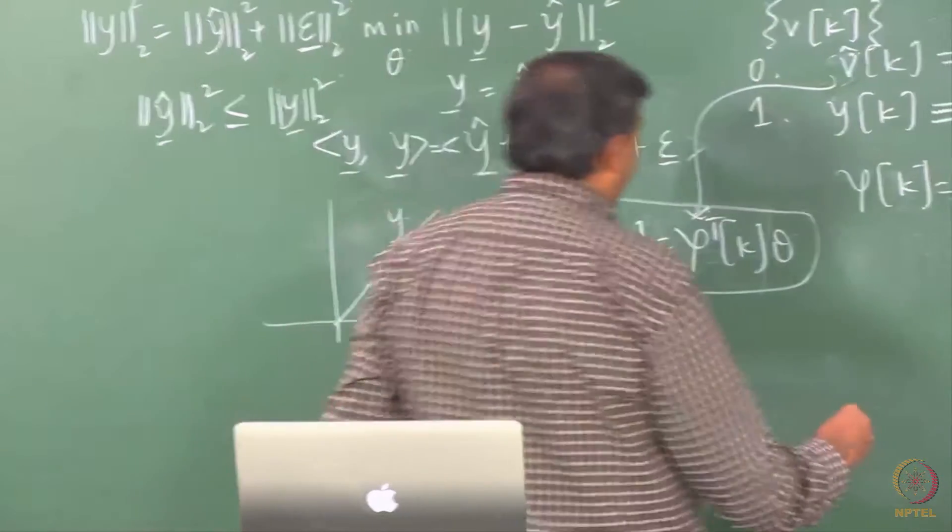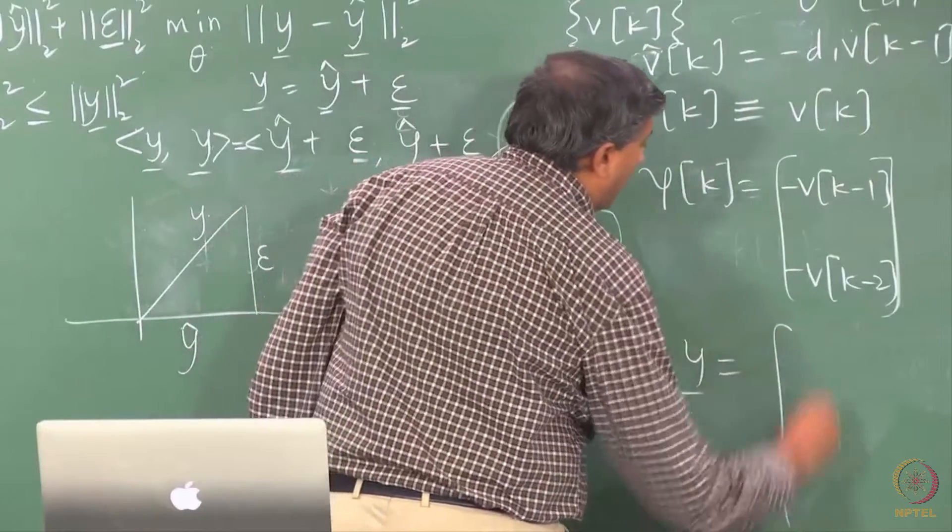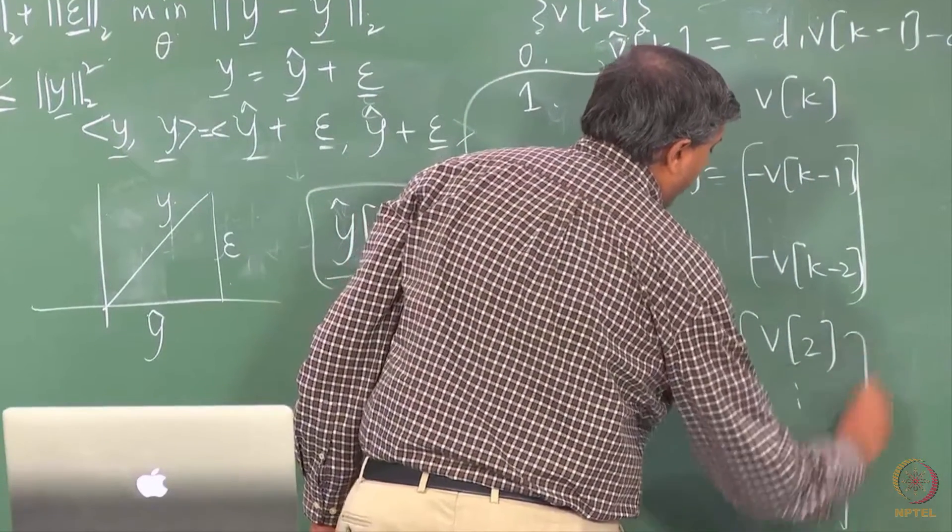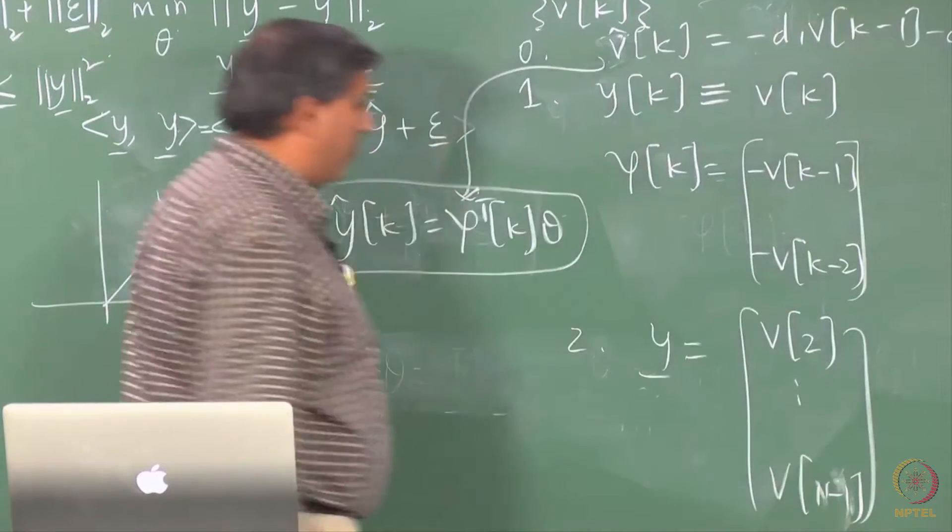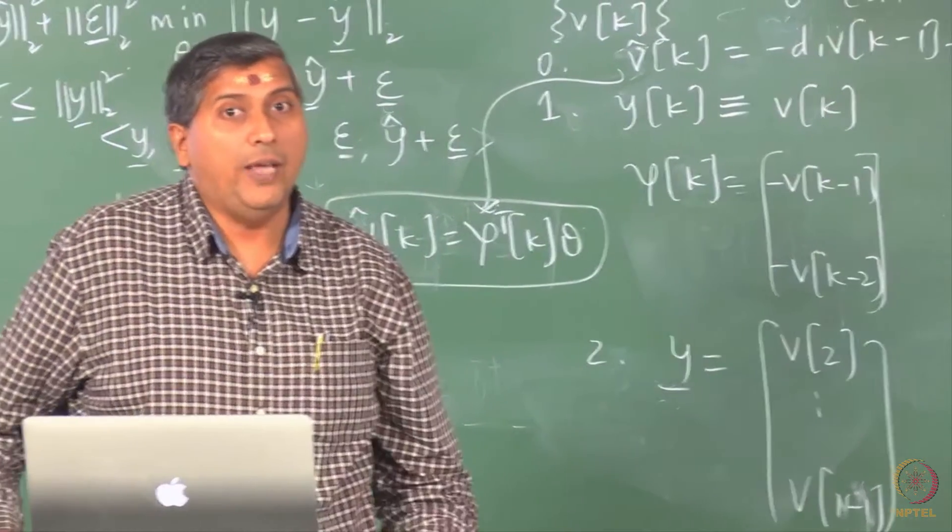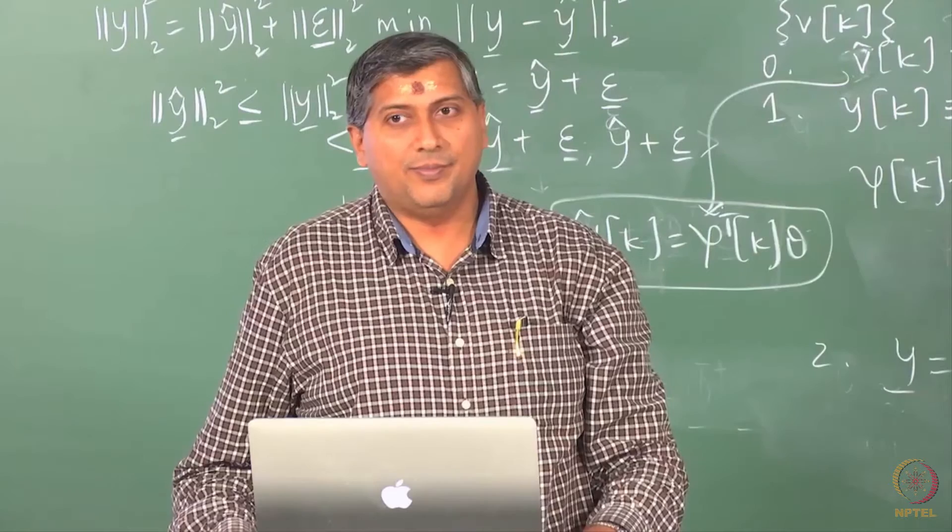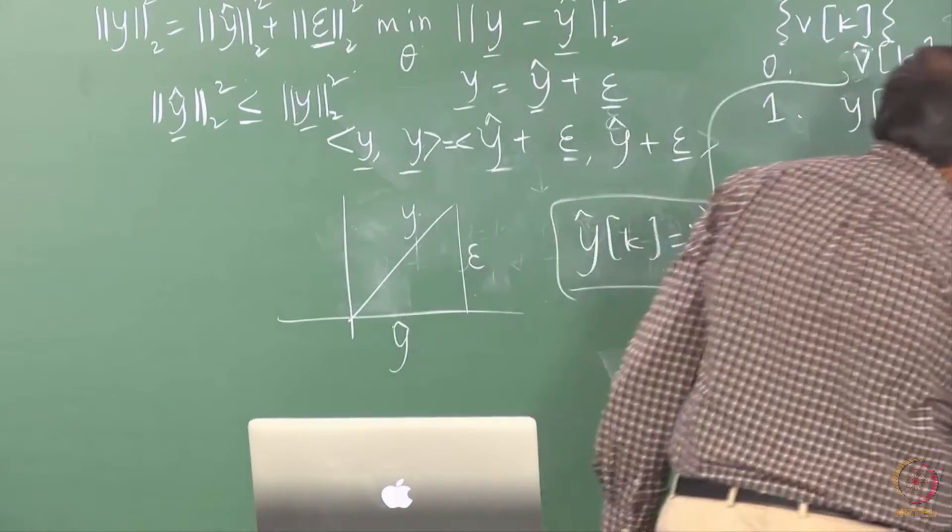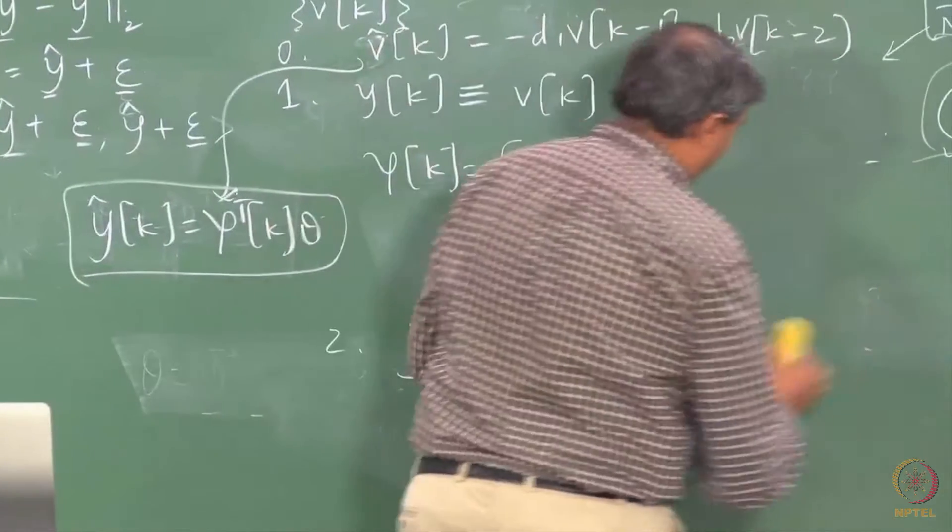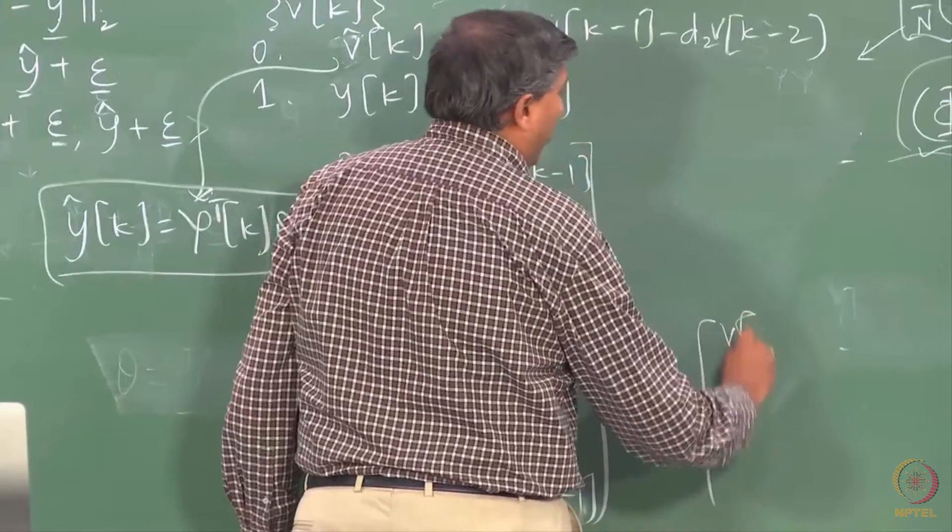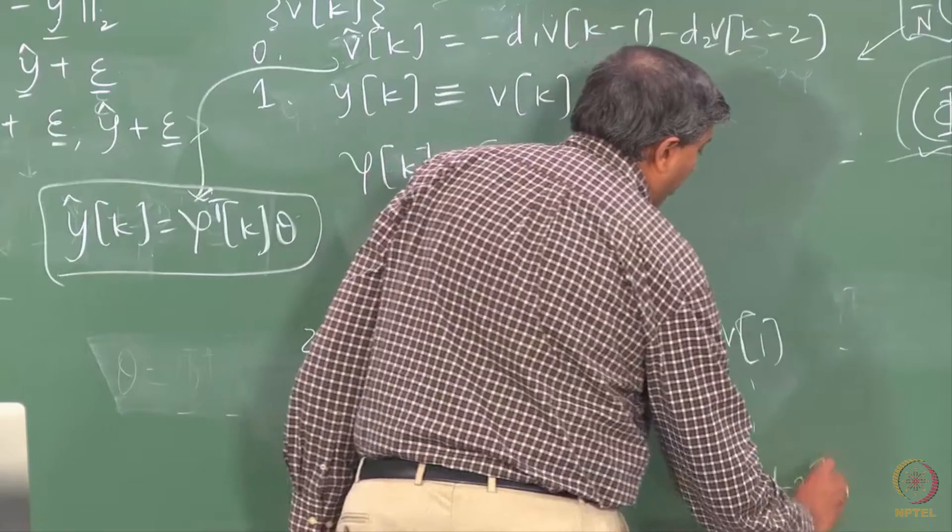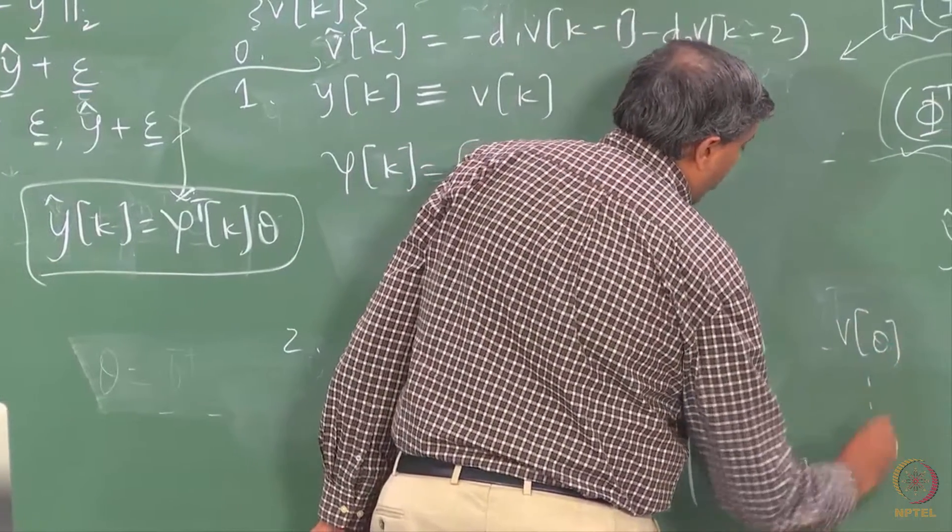That means my Y vector now will start from 2 and go up to N, N minus 1, if my counting, since my counting is from 0. Likewise, what is what will be your phi? What is the first column of phi? Phi would be V2, what would be V1 up to N minus 2. And this would be V0 running up to N minus 3.